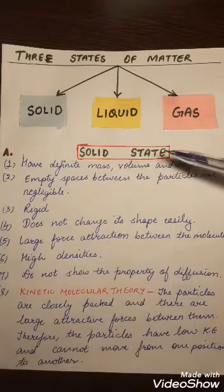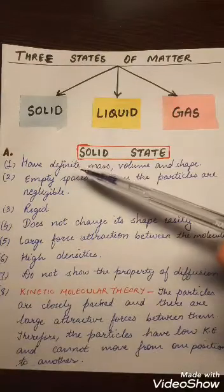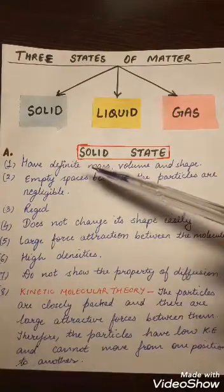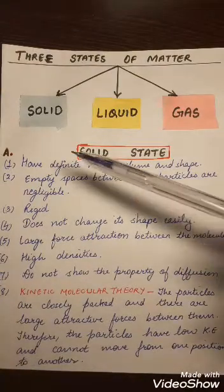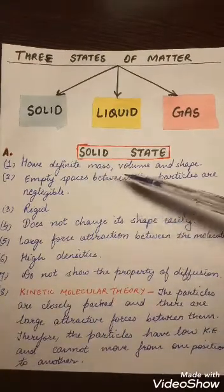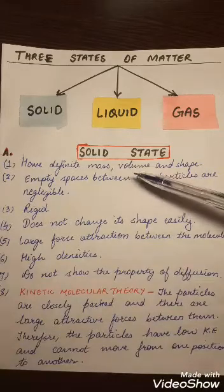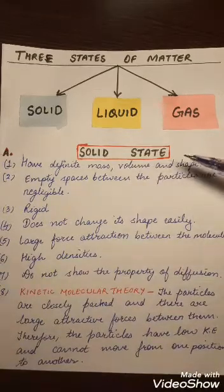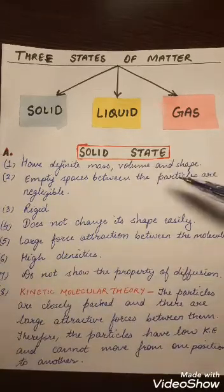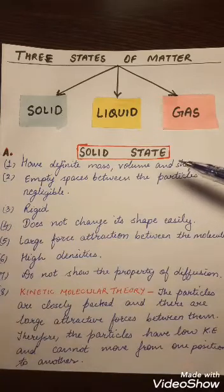First, the solid state. Solids have a fixed mass — we can say definite mass — a fixed volume which will not change, and a fixed shape. The shape of a solid also will not change.